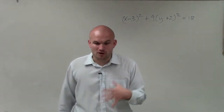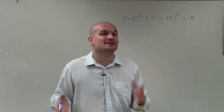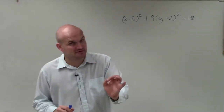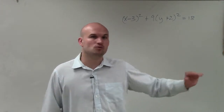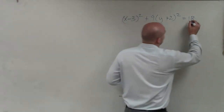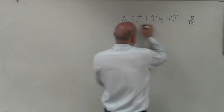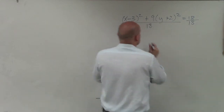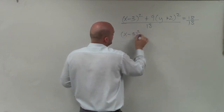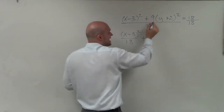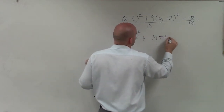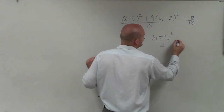The main important thing we need to do first is make sure it's in standard form. Both forms for graphing an ellipse always equal 1. Since this equation does not equal 1, the first thing I'm going to do is divide by 18 on both sides. This 18 divides into both terms, so I'm going to have x minus 3 squared divided by 18, plus 9 over 18 reduced to one half — so y plus 2 squared divided by 2 equals 1.